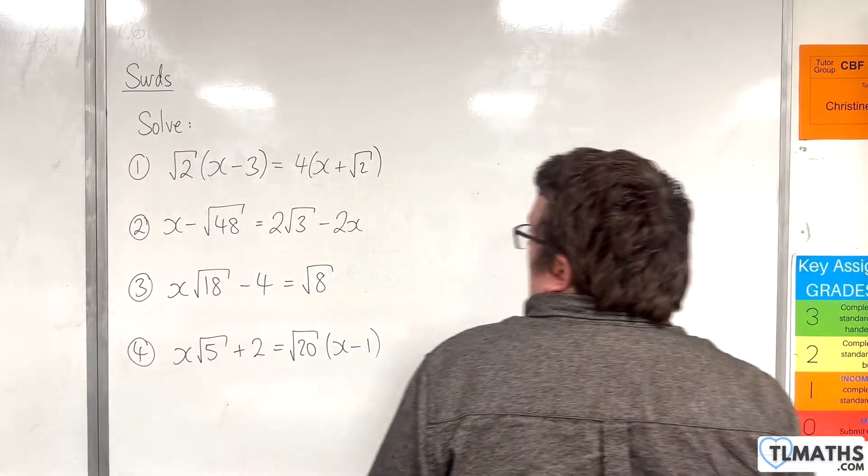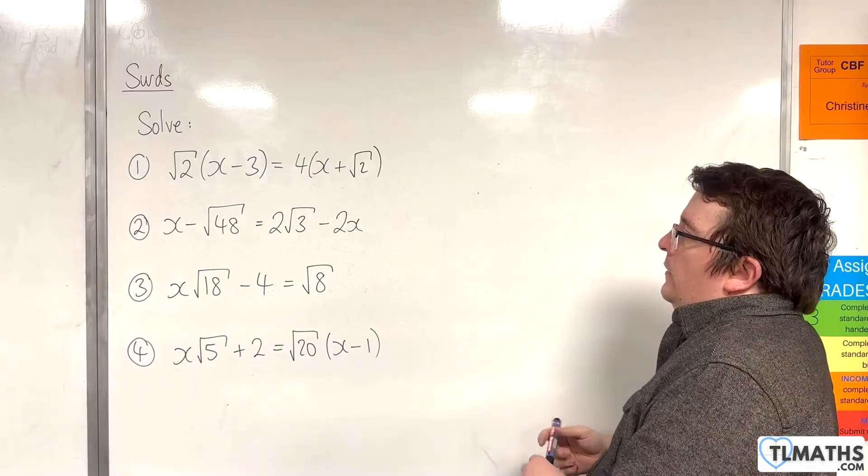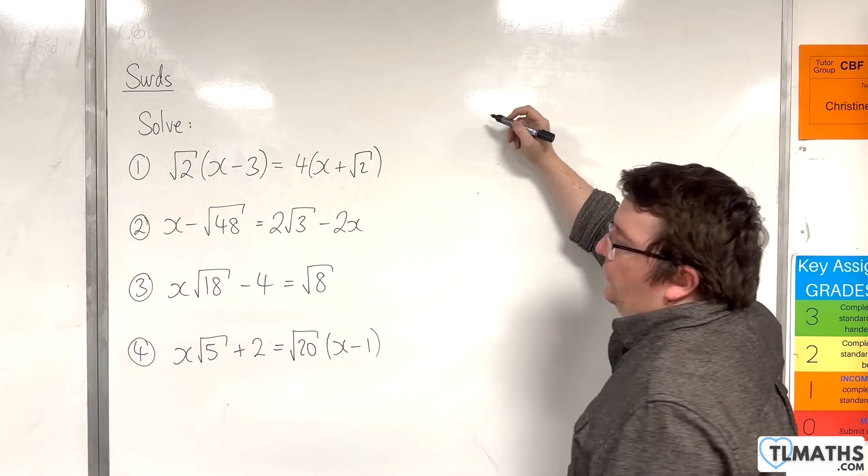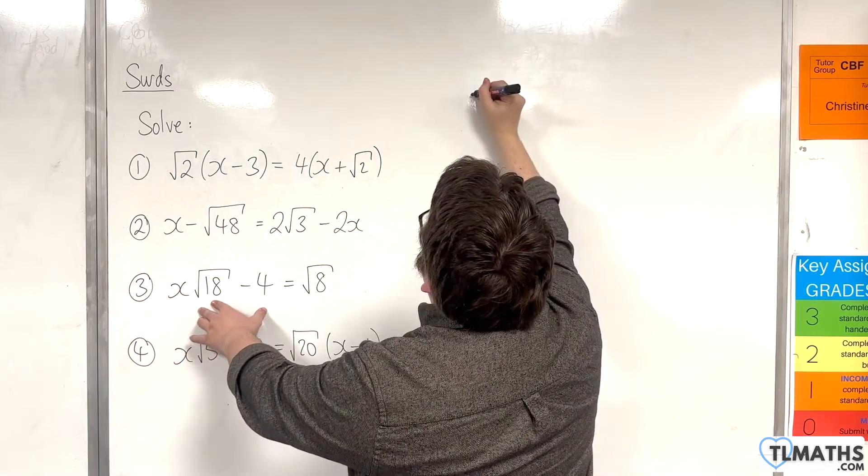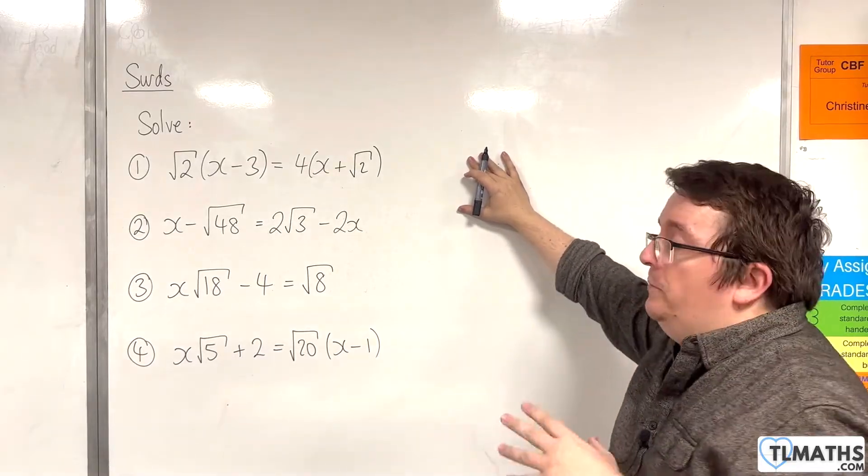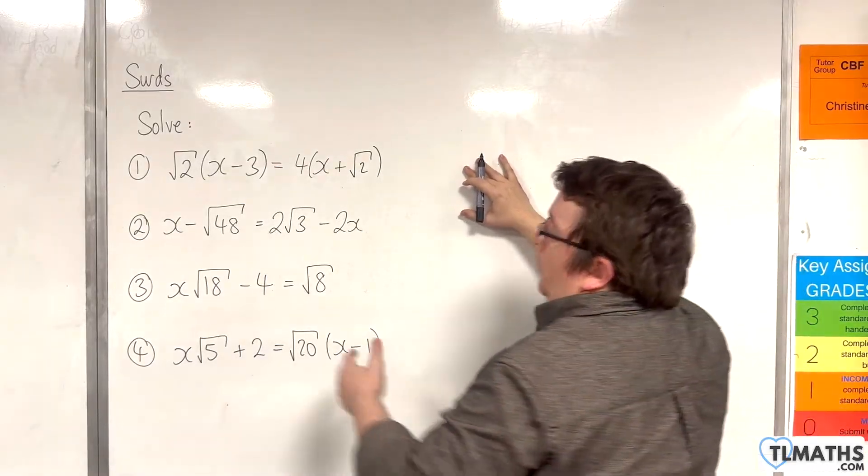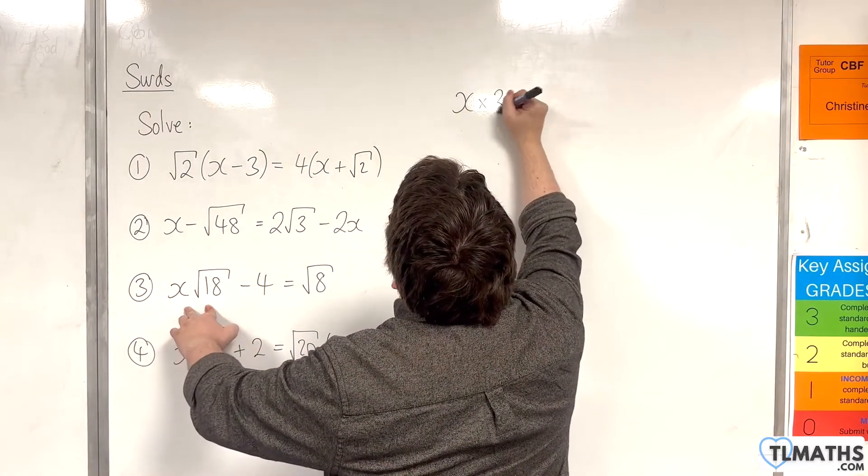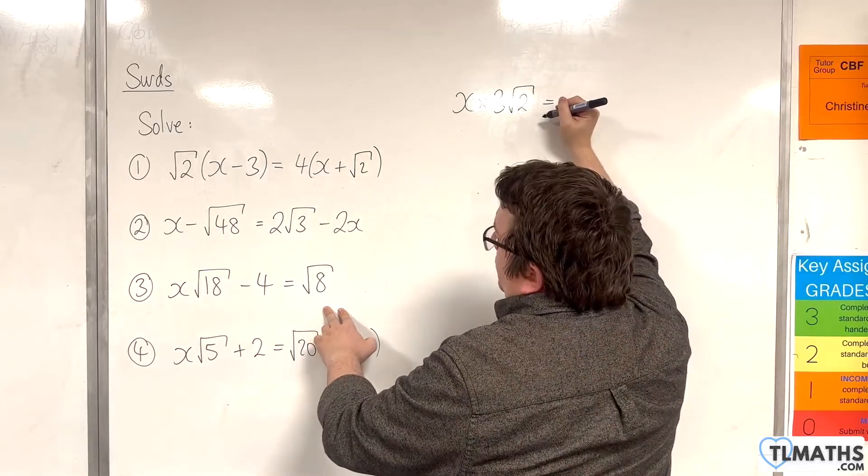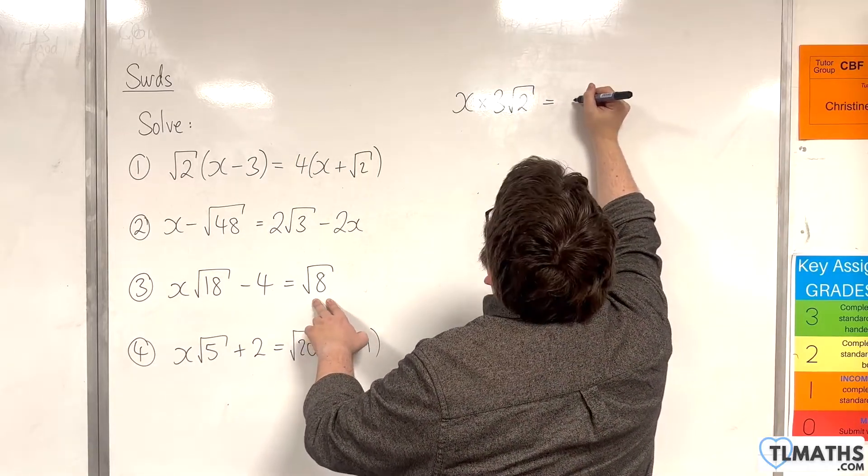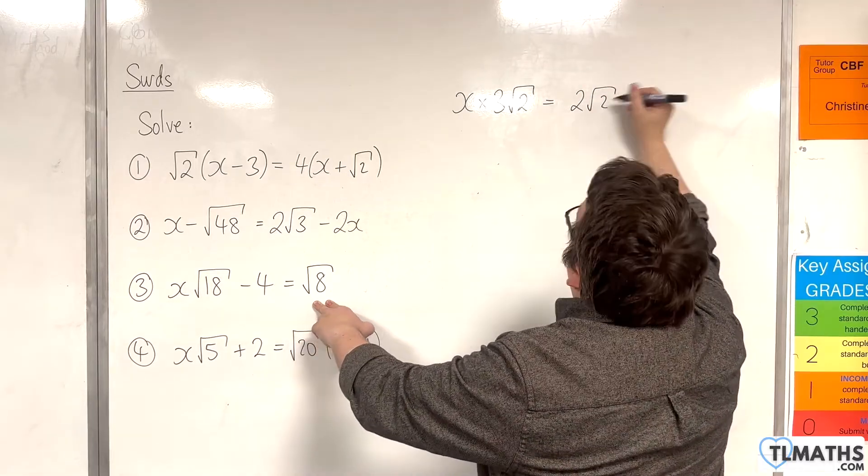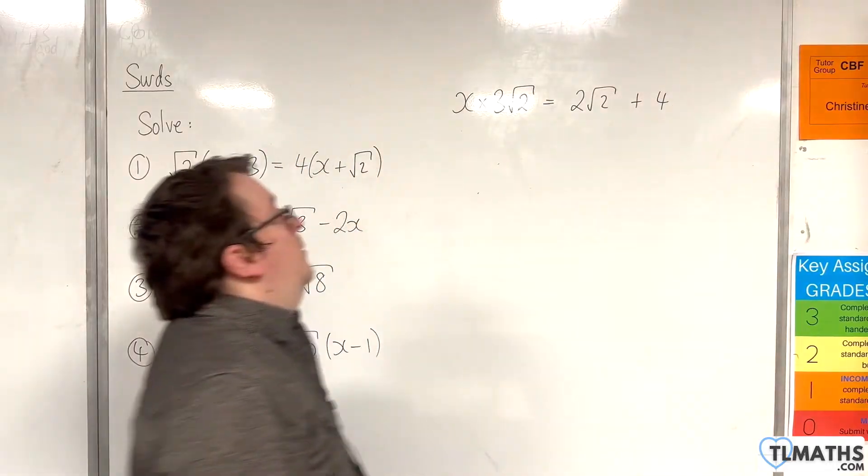Number 3, we have x root 18 take away 4 is equal to root 8. So this is all about simplifying with surds here. So I'm going to write root 18, because 18 is 2 times 9, as 3 root 2. So this is x times by 3 root 2. I'm going to add the 4 to both sides. And we're going to have root 8, which I'm going to write as 2 root 2, because 8 is 4 times 2. And we've got the plus 4.